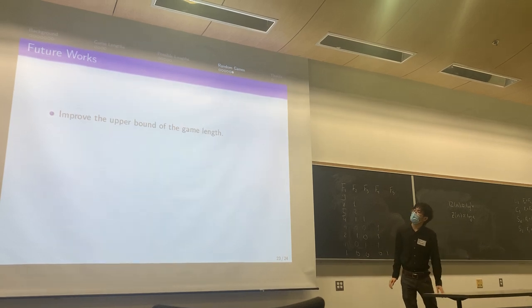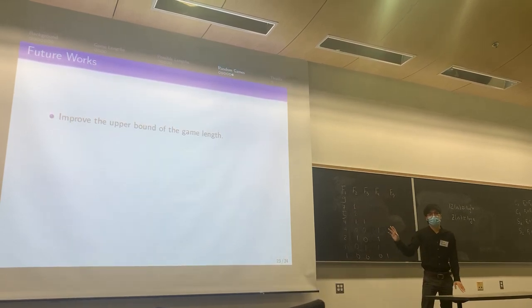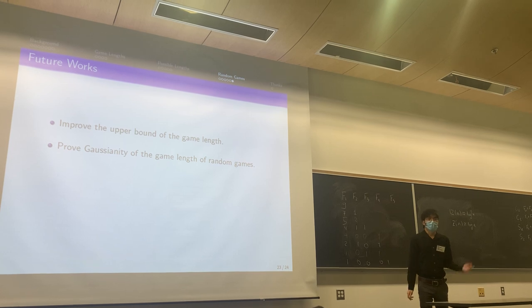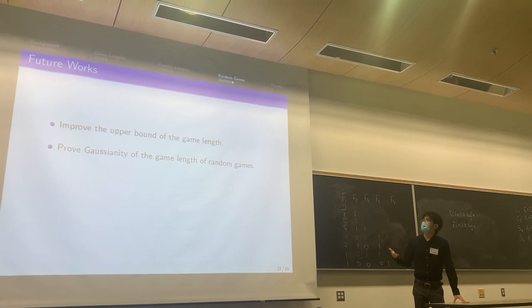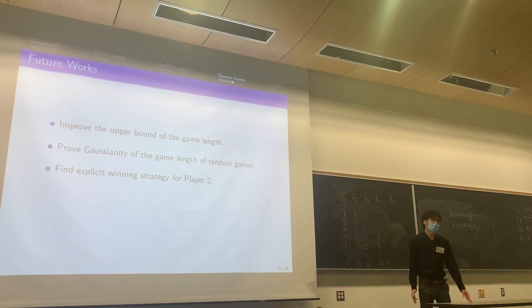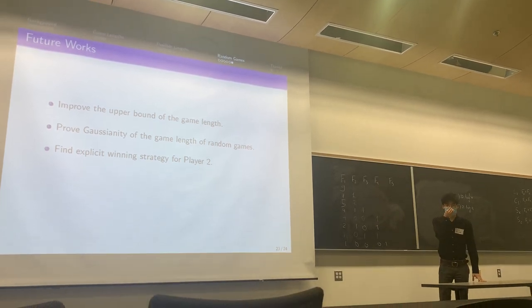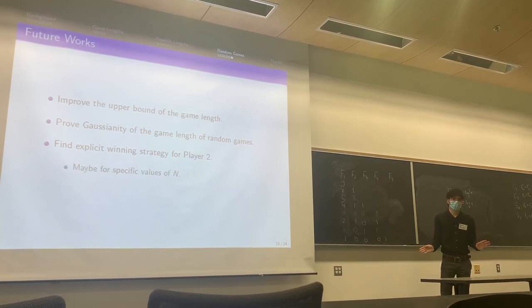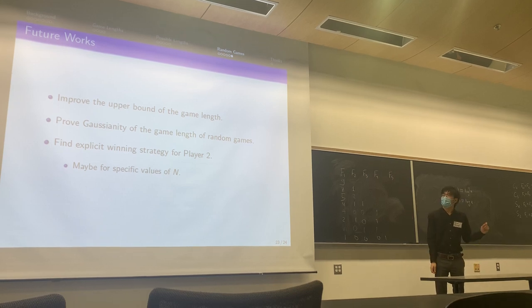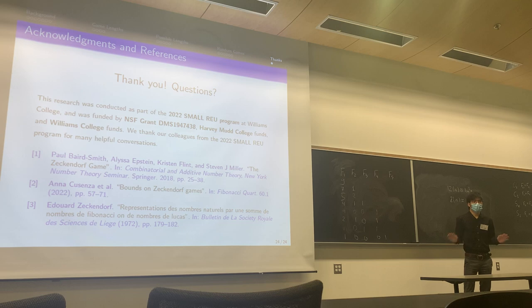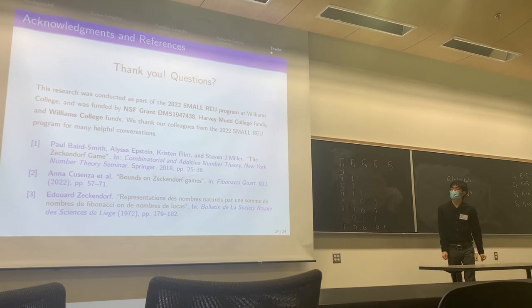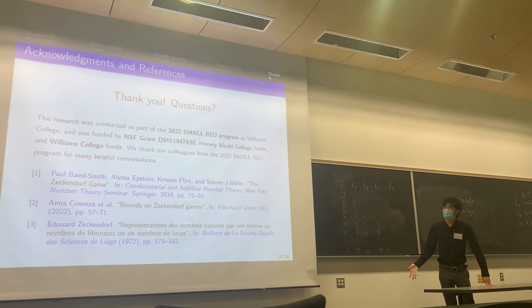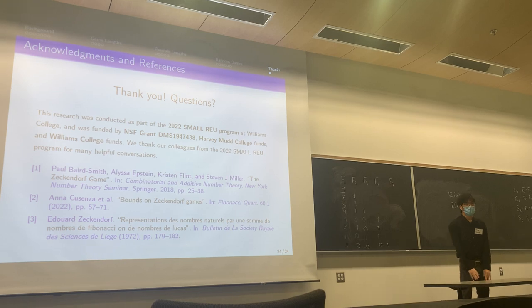Our future work now would be improving the upper bound of the game, because the upper bound is sharp for certain values of n but not all n. Obviously we are trying to prove the conjecture about the Gaussian distribution of the random games, and we are still also in the quest of finding the explicit winning strategy for player two. And that's the end of our talk. Thank you for listening. We'd like to thank Ohio State University and the UIMC for inviting us, and our colleagues and friends at the small group programs, and we would like to take any questions you have.